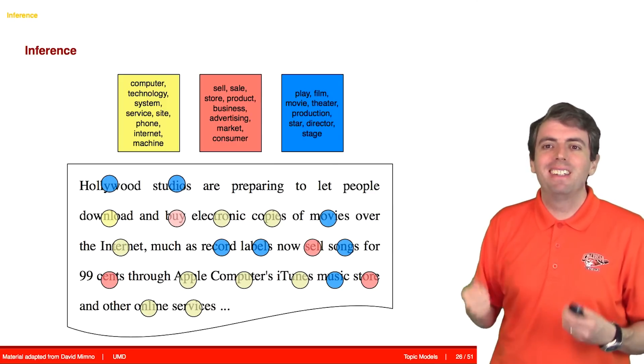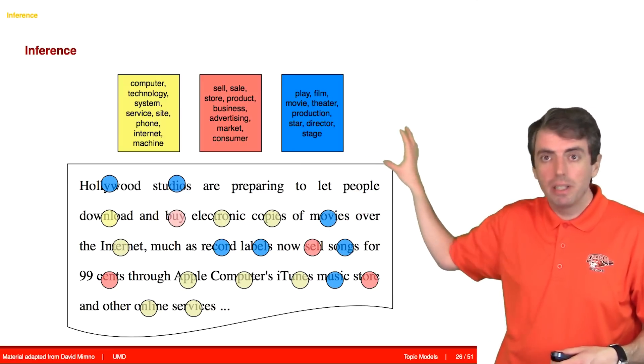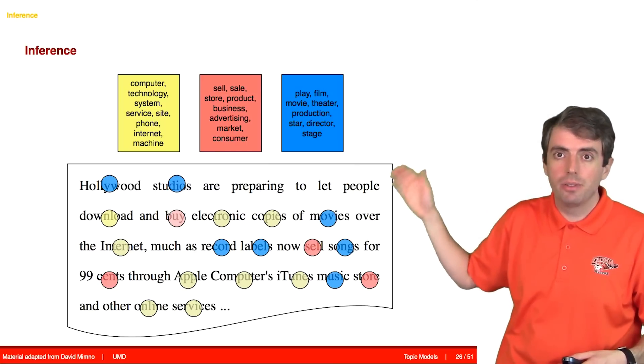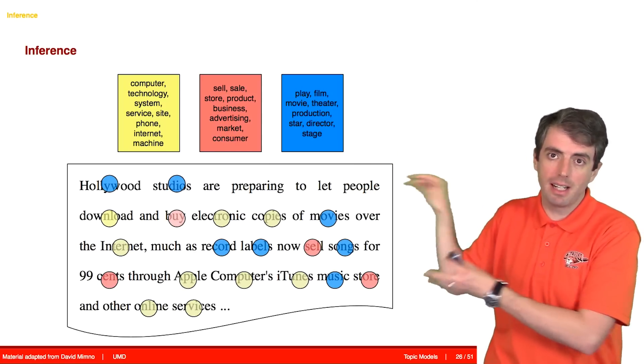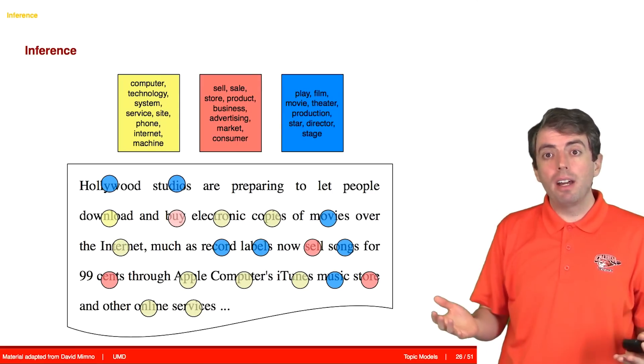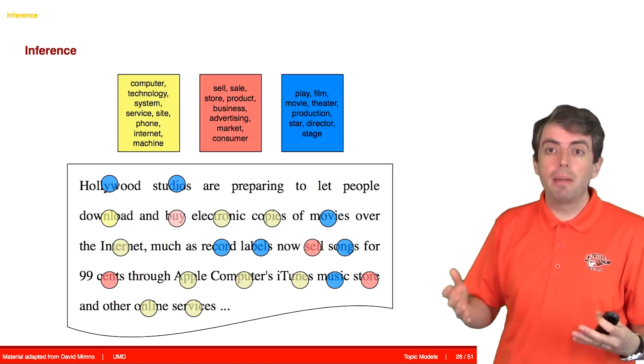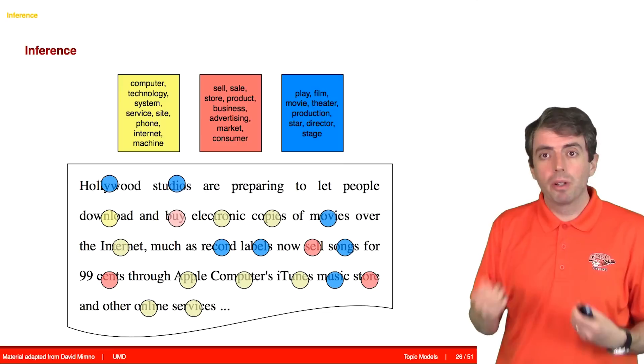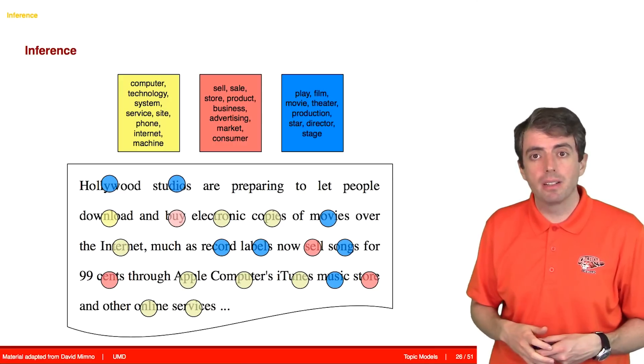What we're going to assume is that we have some collection of latent variables that completely describe how we go from topics to allocations to assignments to generate our complete document collection. These don't have to be particularly good explanations of what's going on. We just have to have some explanation of how our data came to be. And what we're going to do is slowly change these and hopefully get to a better answer.